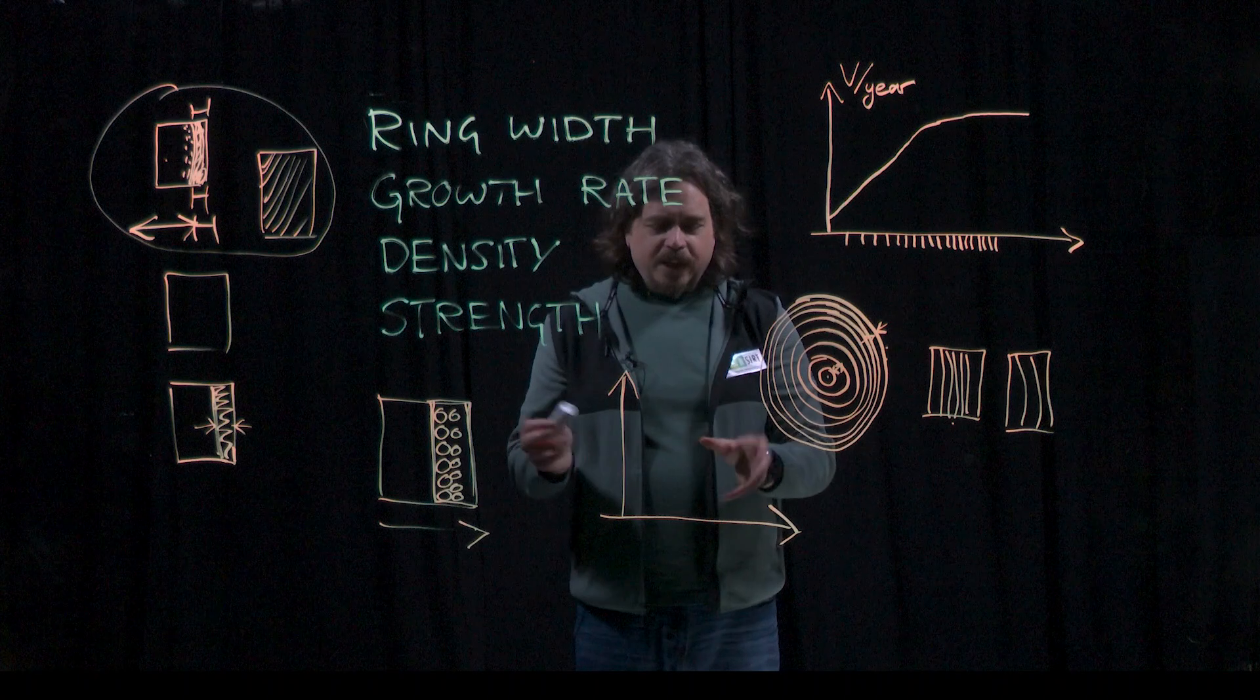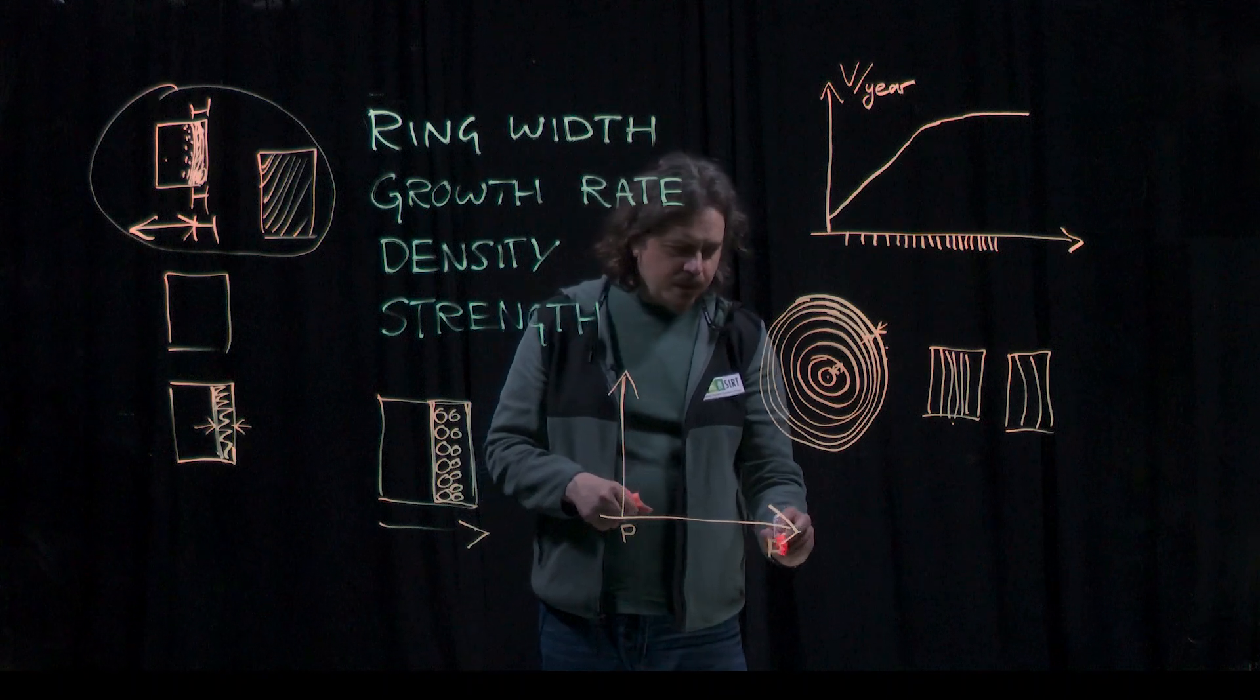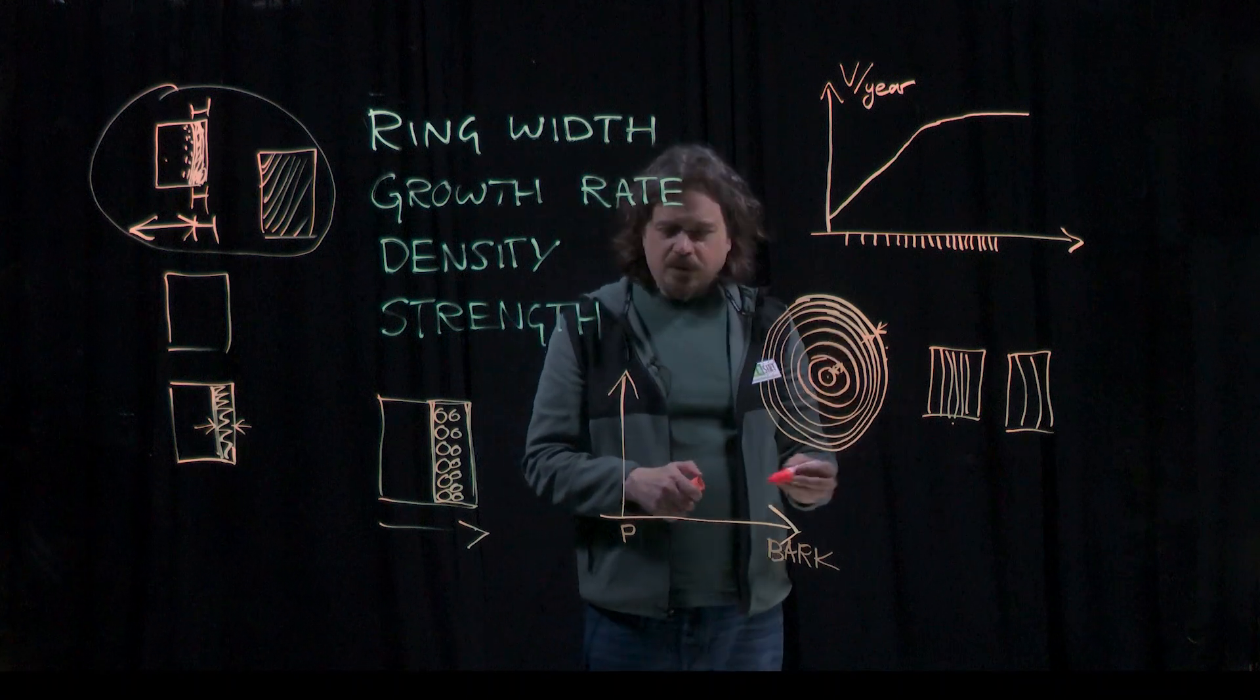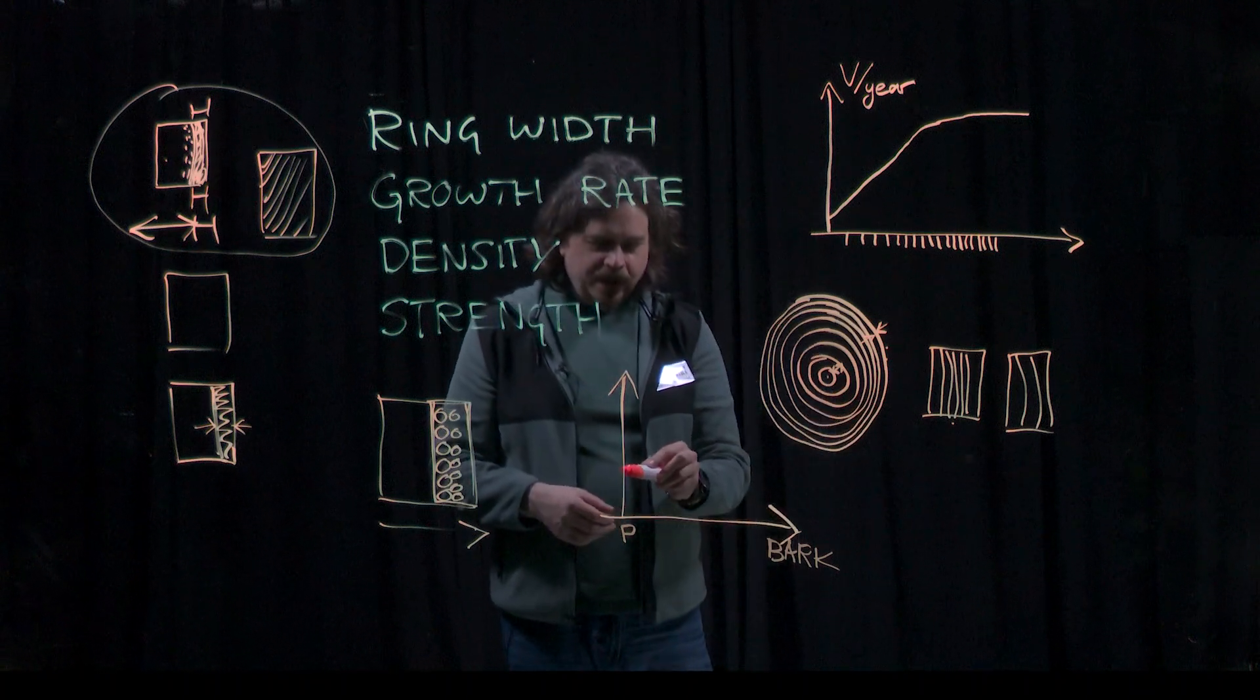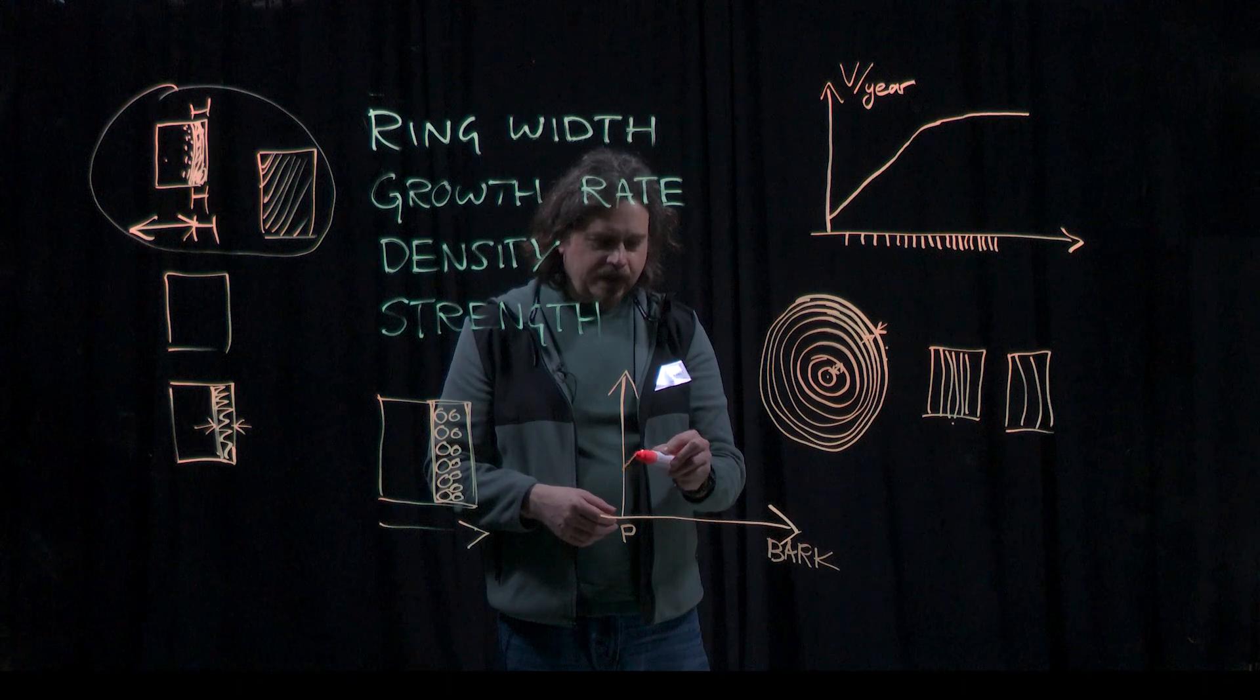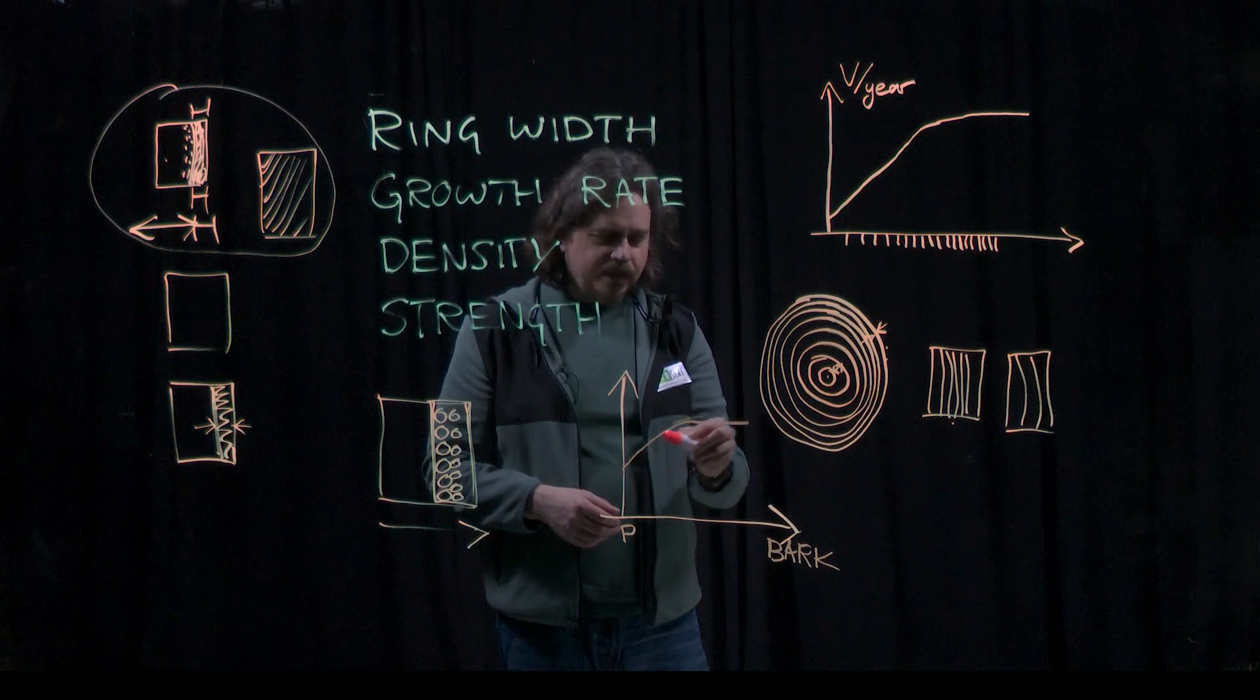You see these radial trends in properties from pith to bark if you average many trees. If you just look at one tree, you'll see all sorts of random stuff going on in there. But if you average many, many trees of a certain species, you will tend to see that the density will increase to a certain point, and the stiffness will follow some kind of similar thing, and so will strength.